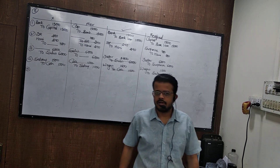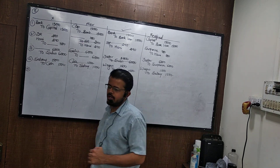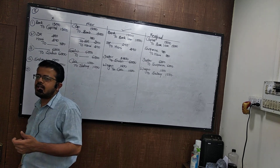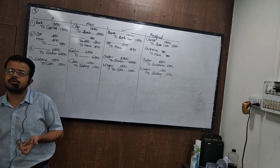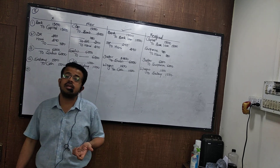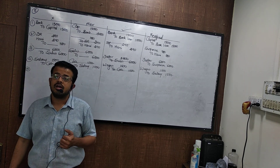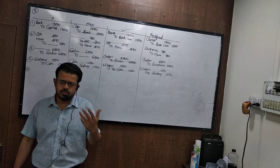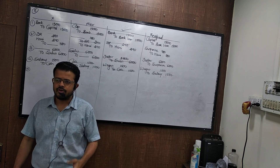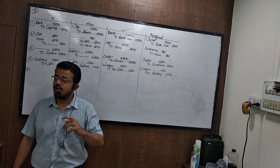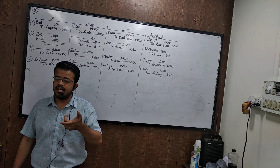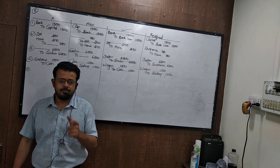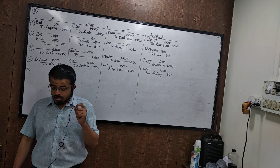Repairing charges of 1500 paid to motor mechanic Shadar were debited to his personal account. The correct entry for paying repairs is repairs to cash. Wrong entry is Shadar to cash. Reverse is cash to Shadar, and rectified is repairs to Shadar.